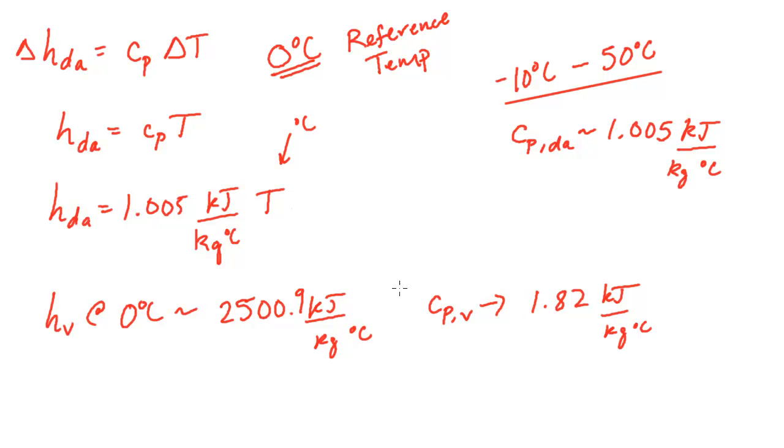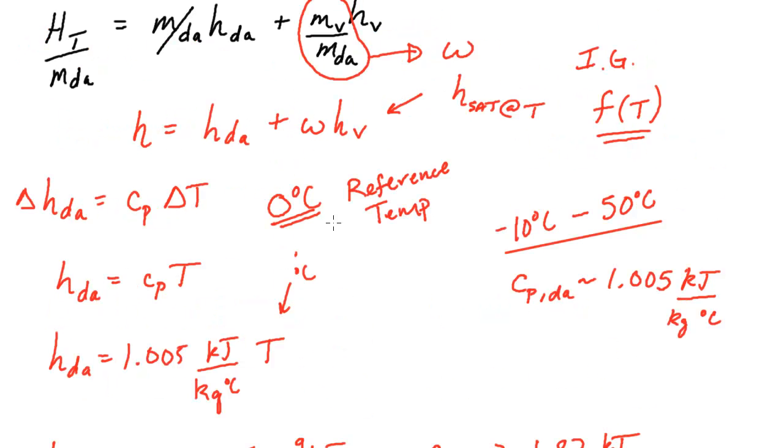And so what we can do now is combine these two, because this is a base enthalpy, and then when enthalpy goes away from this 0 degrees C, we have to go up by linear multiples of this 1.82. So let's take all this information, and let's get a final total relationship for enthalpy.